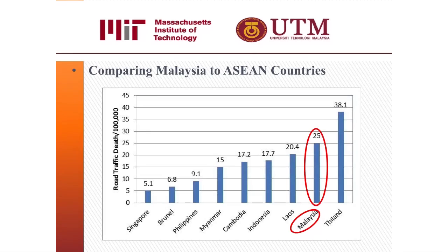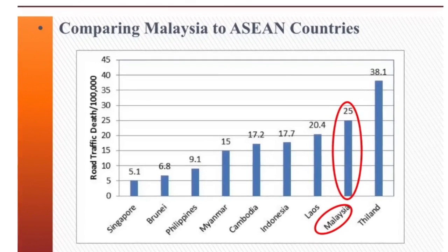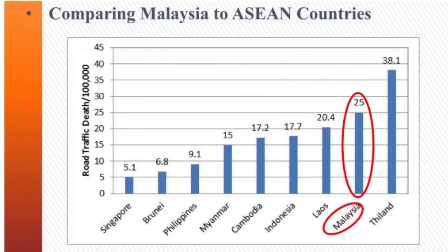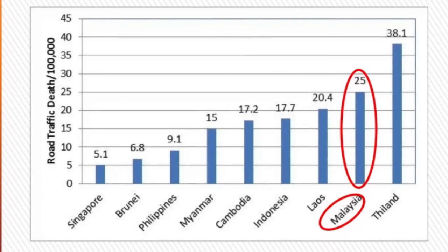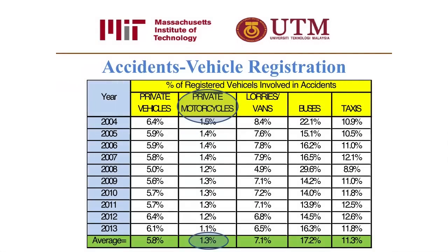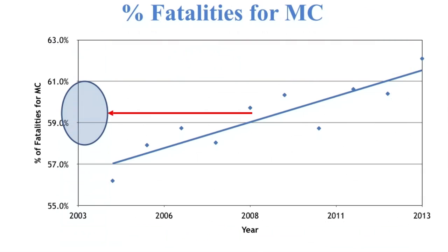Considering the countries around Malaysia, some countries like Singapore and Brunei have fatality rates within the same range as developed countries. On the other hand, the fatality rate in Malaysia is among the highest in Southeast Asia — about five times the fatality rate of neighboring Singapore. Looking more closely at Malaysia's accidents, the percentage of motorcycles involved in accidents is about 1.5%, while the percentage of fatalities among motorcyclists is about 60% of total fatalities.